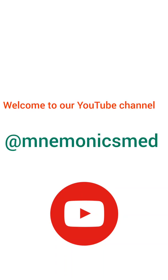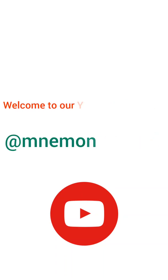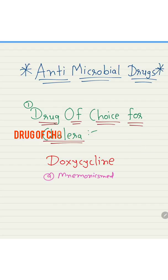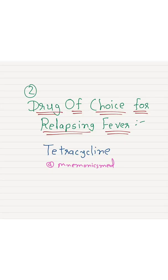Welcome to our YouTube channel Mnemonics Med. Today we will learn about drugs of choice of antimicrobials, part one. The drug of choice for cholera is doxycycline. You have to remember doxycycline for the drug of choice for cholera.